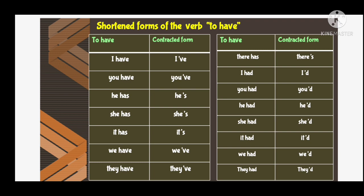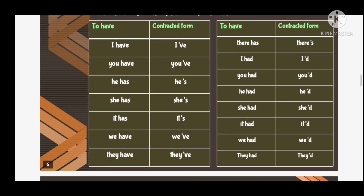The next table has the verb 'to have' and its contracted forms. 'I have' — contracted form is 'I've', I apostrophe ve. 'You have' — contracted form is 'you've', you apostrophe ve. 'He has' — contracted form is 'he's'. 'She has' — contracted form is 'she's', she apostrophe s. 'We have' — contracted form is 'we've', we apostrophe ve. 'They have' — short form is 'they've', they apostrophe ve.